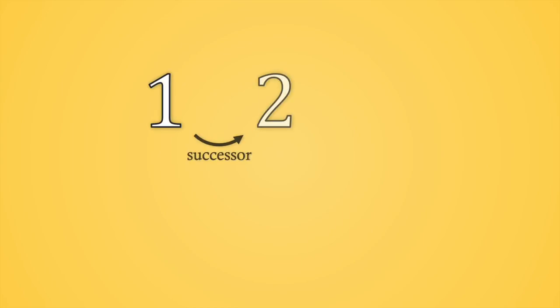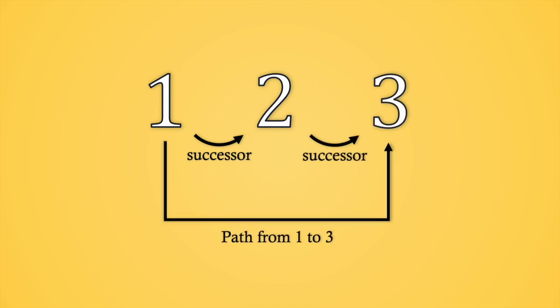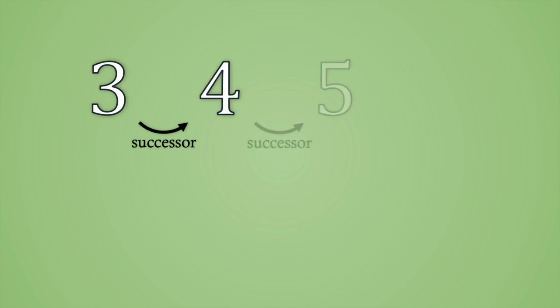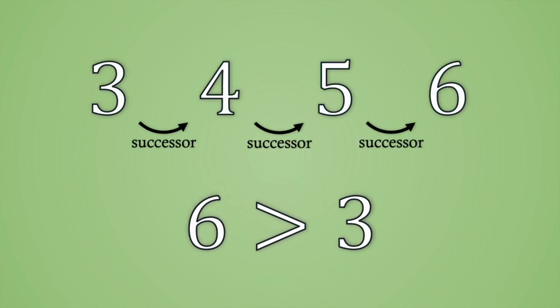We know that the successor of 1 is 2, think about it with sets of smileys, and the successor of 2 is 3. This process creates a path of successors from 1 to 3, which gives us a more rigorous argument to justify that 3 is bigger than 1. We can do this whenever we want to prove that some number is bigger than another. For example, there exists a path of successors from 3 to 6, so we can ensure that 6 is bigger than 3.